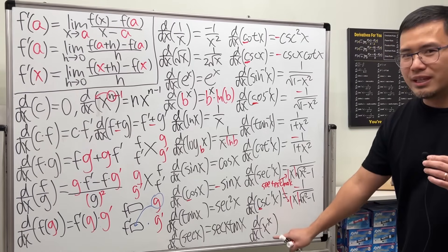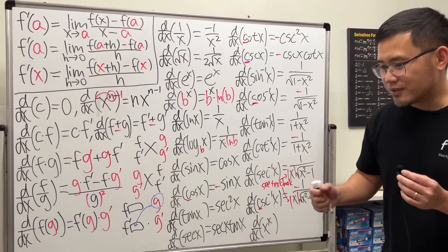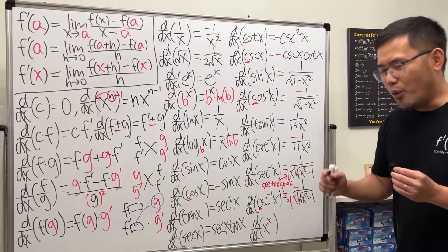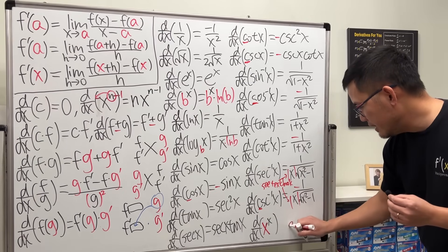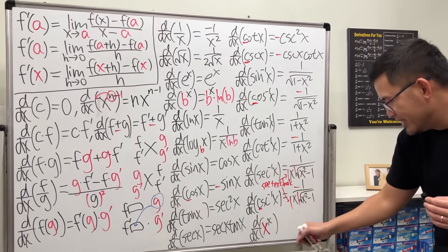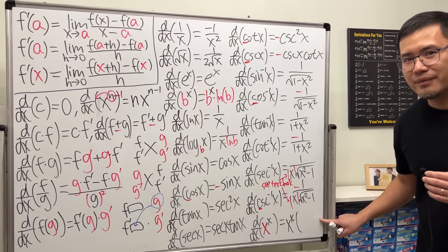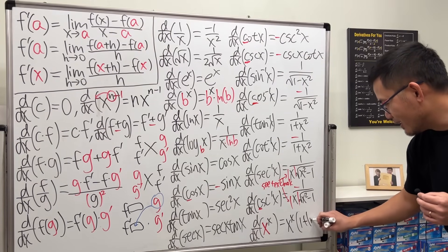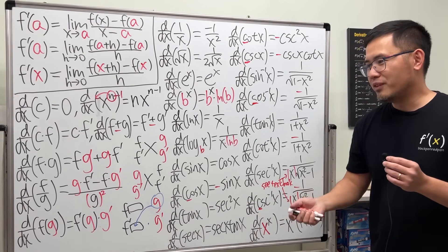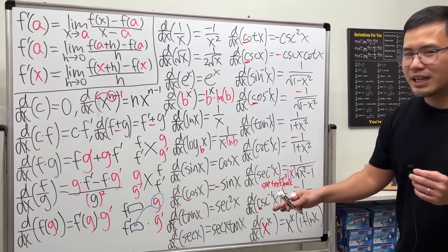Finally, the derivative of x to the x. You can use logarithmic differentiation or rewrite x as e to the ln(x), then raise to the x power, and differentiate. The answer: x to the x times (1 plus ln(x)). This was recorded in one take — well, actually a second take — and if you want to see the first take, check the link in the description.